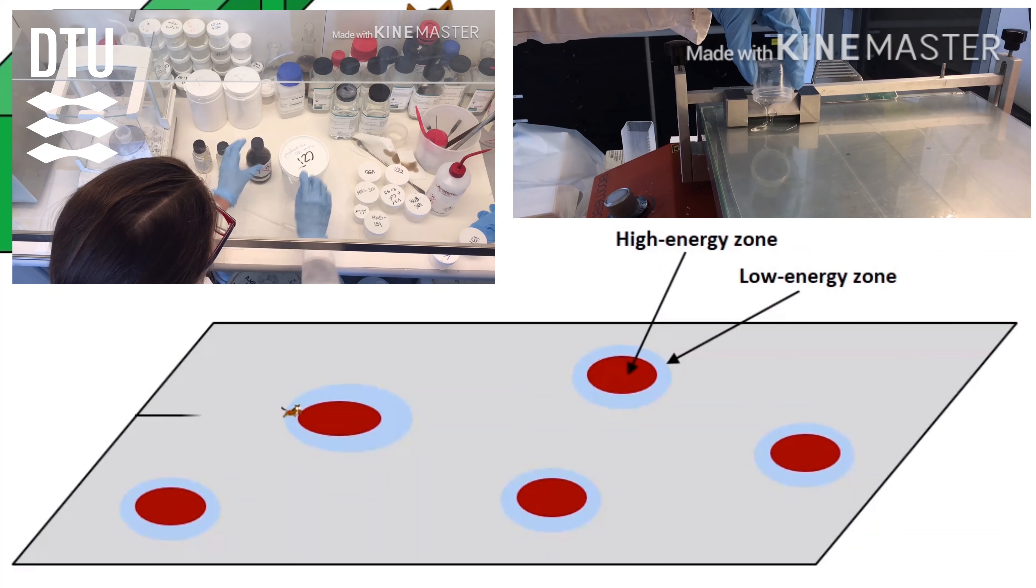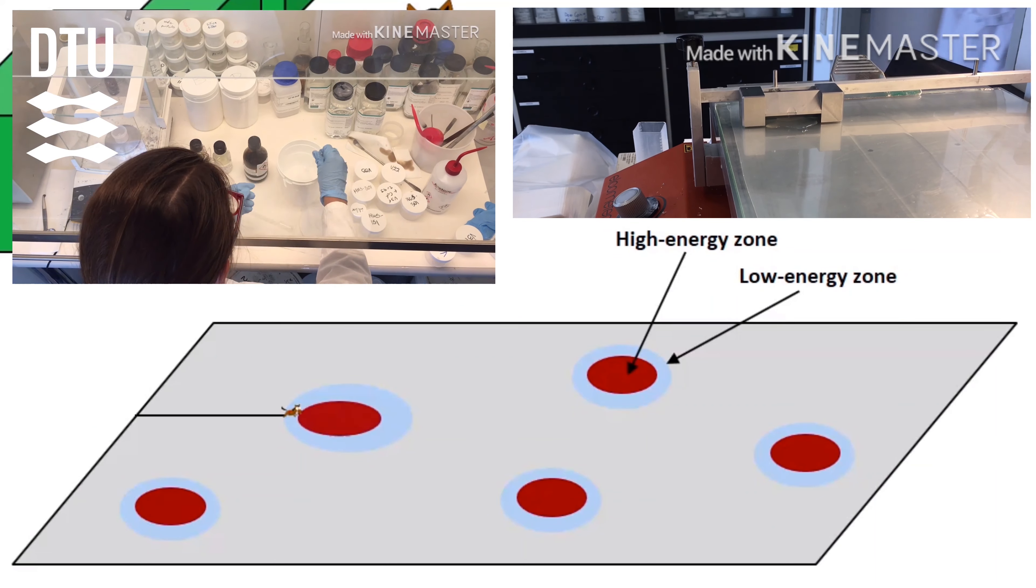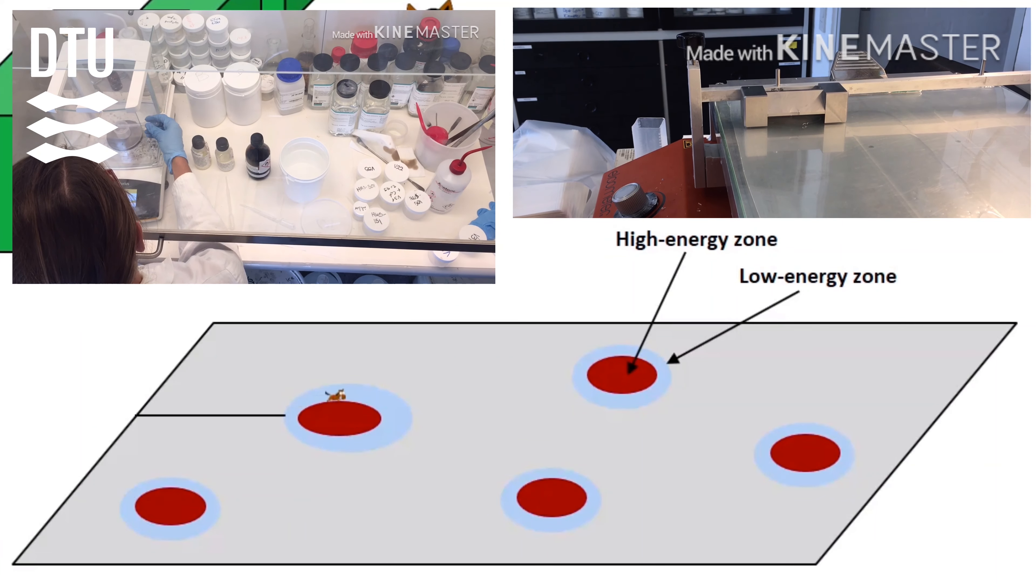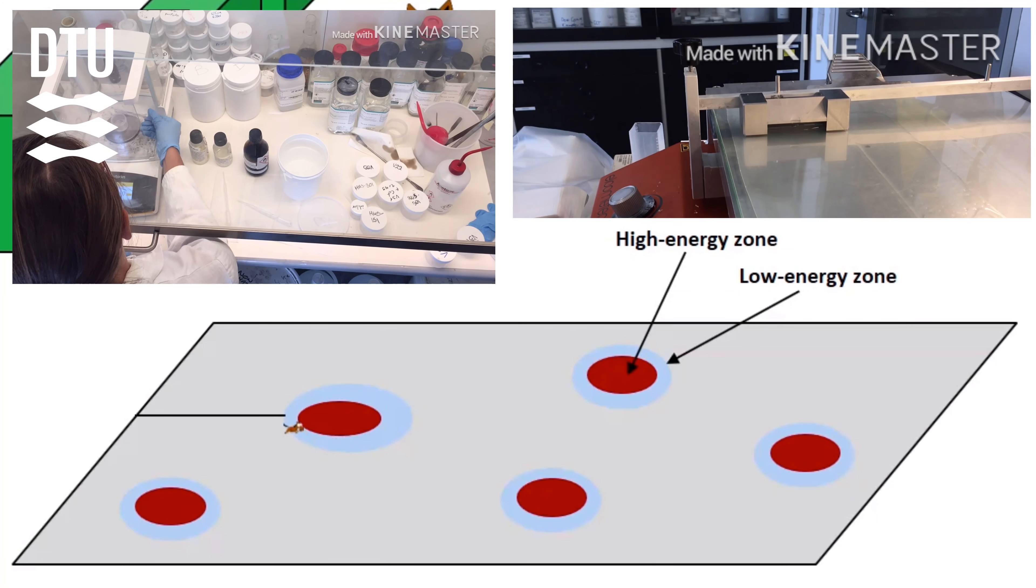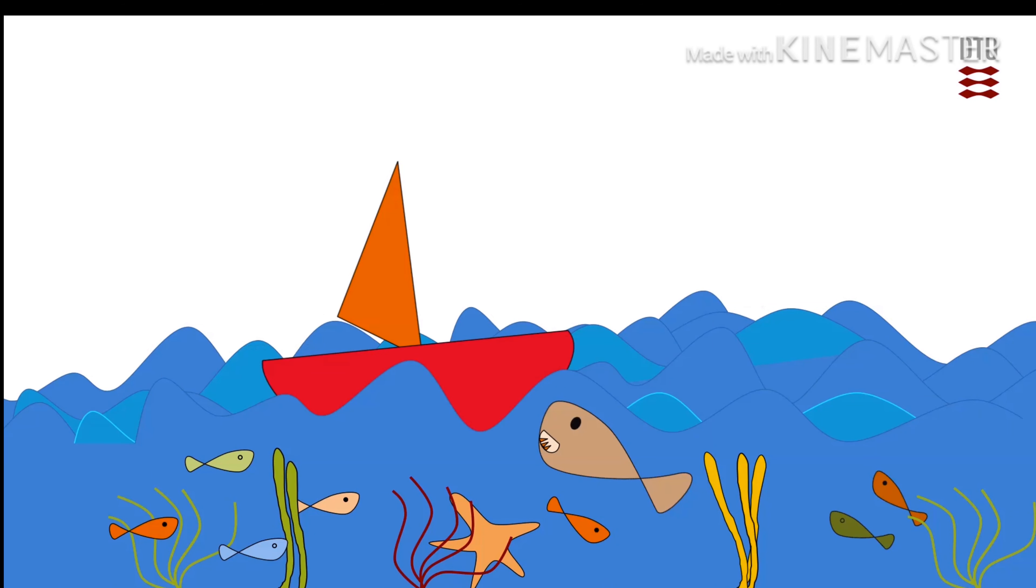The propagation of the crack will then be inhibited in the low energy zones, so-called liquid zones. Such coating will then be ready to protect our boats in harsh seawater environments.